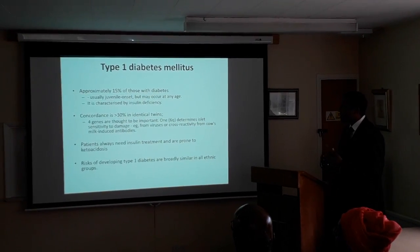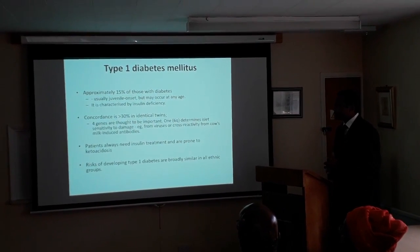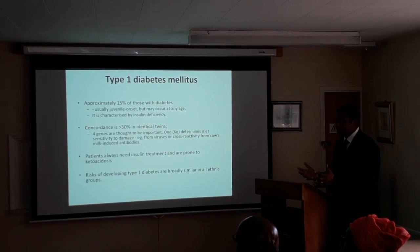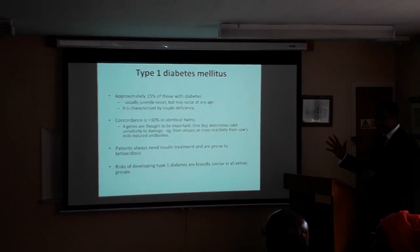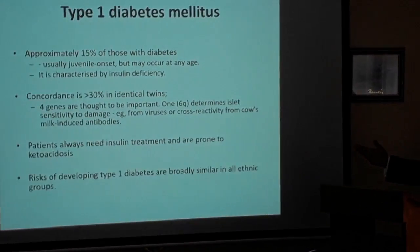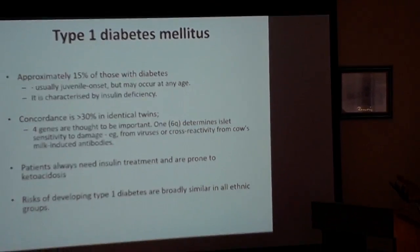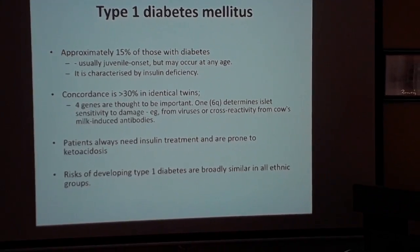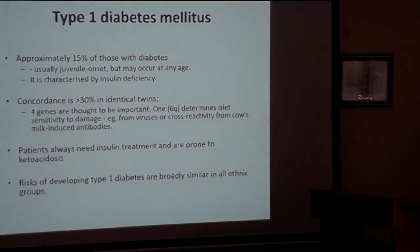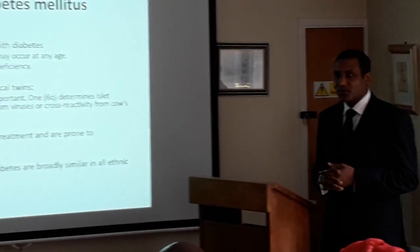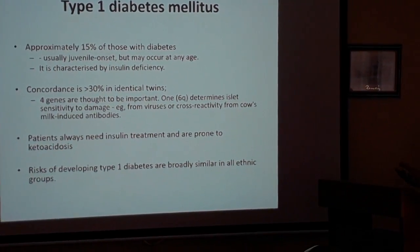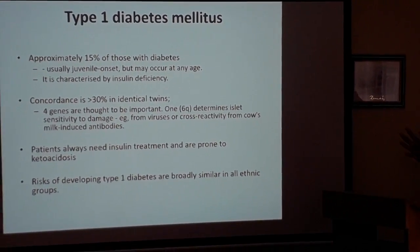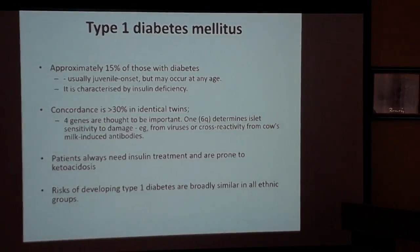Type 1 diabetes accounts for approximately 50% of diabetes cases and is often juvenile onset — commonly seen in teenagers and people in their 20s. There is a concordance in twins of 30%, suggesting some genetic predisposition. It may be linked to certain viral infections or to feeding newborns cow's milk, which could cause cross-reactivity with human insulin proteins.